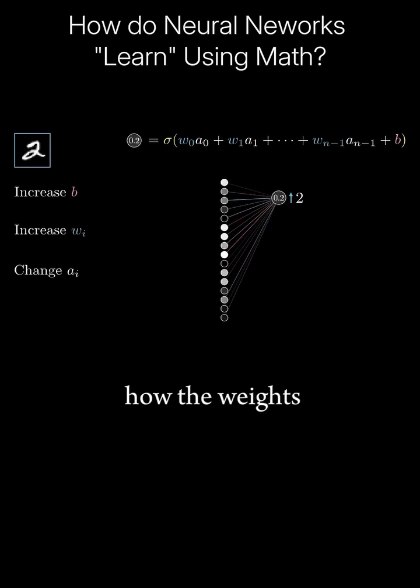Focusing just on how the weights should be adjusted, notice how the weights actually have differing levels of influence. The connections with the brightest neurons from the preceding layer have the biggest effect, since those weights are multiplied by larger activation values.